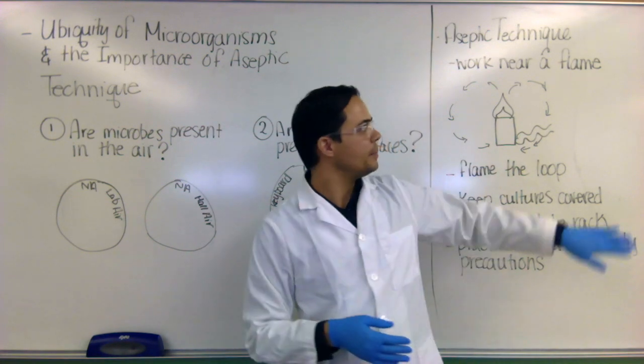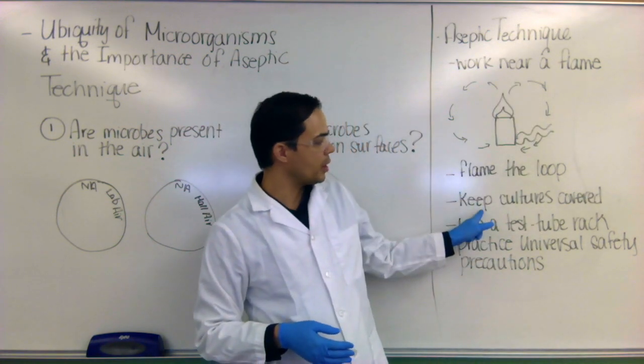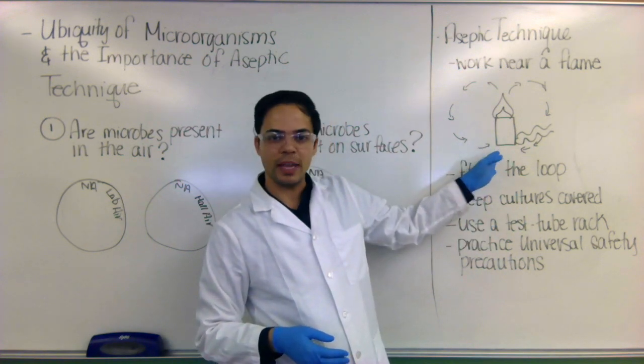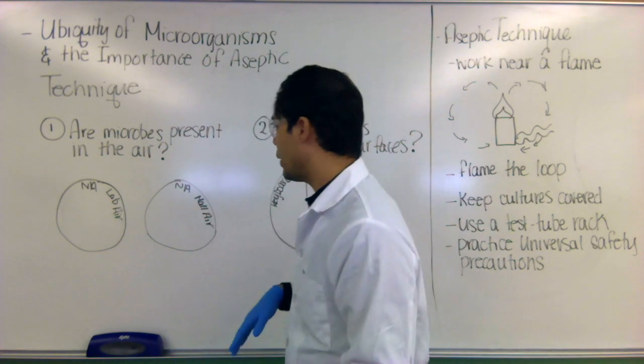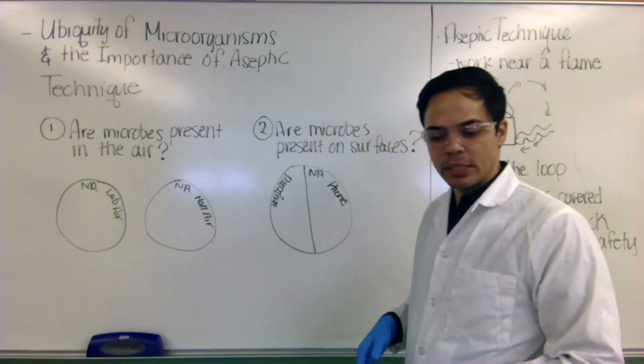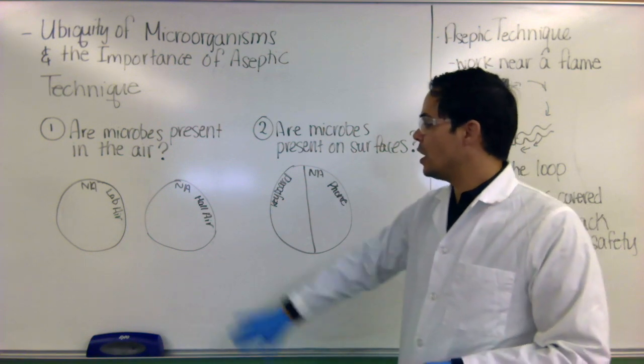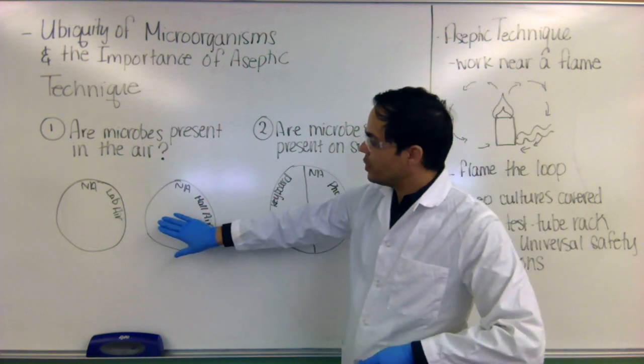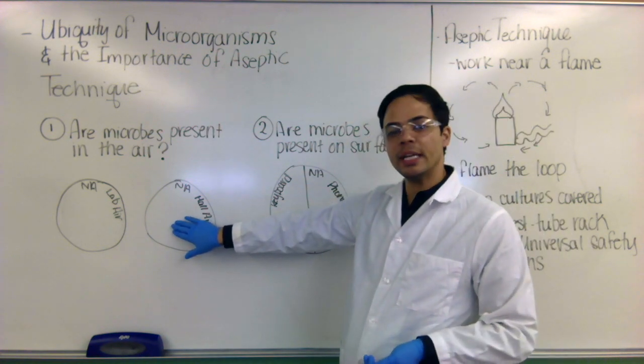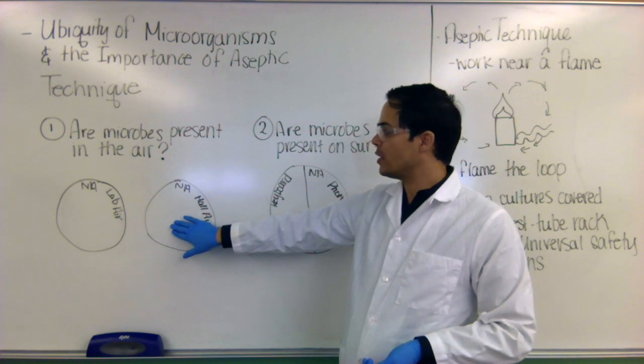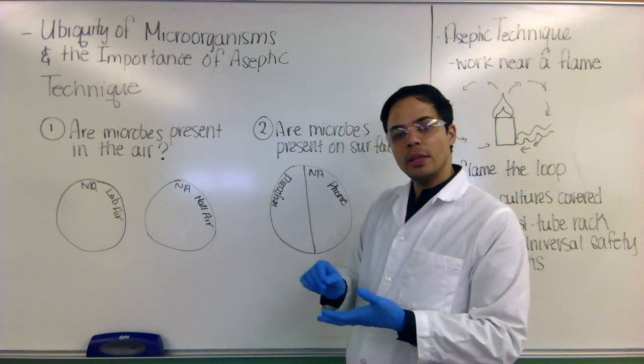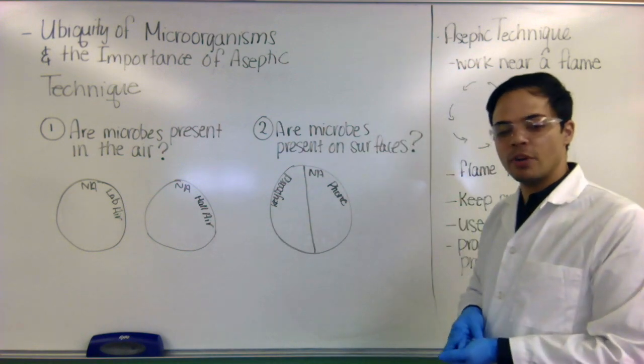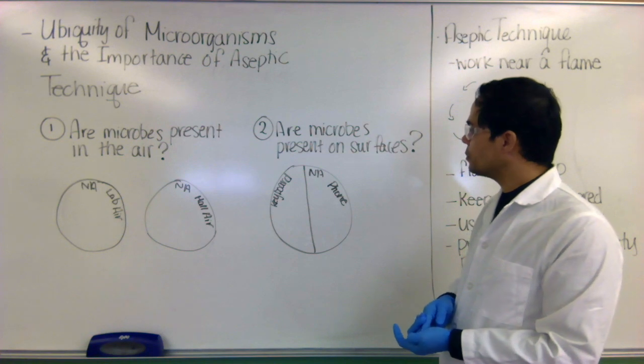So when we're practicing aseptic technique, we always want to keep our cultures covered, unless we're working in an area like next to your flame, where you have a semi sterile area. So try to keep your plates covered at all times, try to keep your tubes covered at all times. And this experiment will show us that. All right, so when you're done with this, and you come back, what you want to do is photograph your data. And you want to put that in your lab notebook and also look at and record the different types of colonies and describe the different colony morphologies.